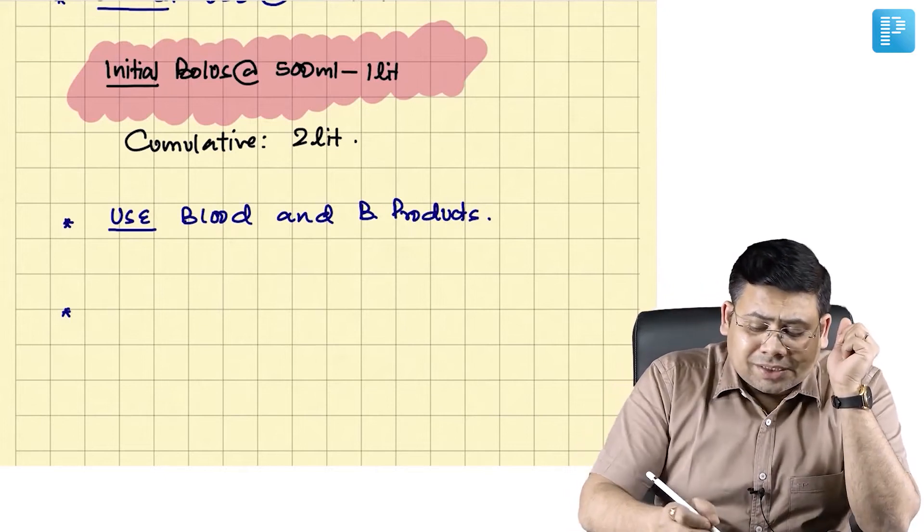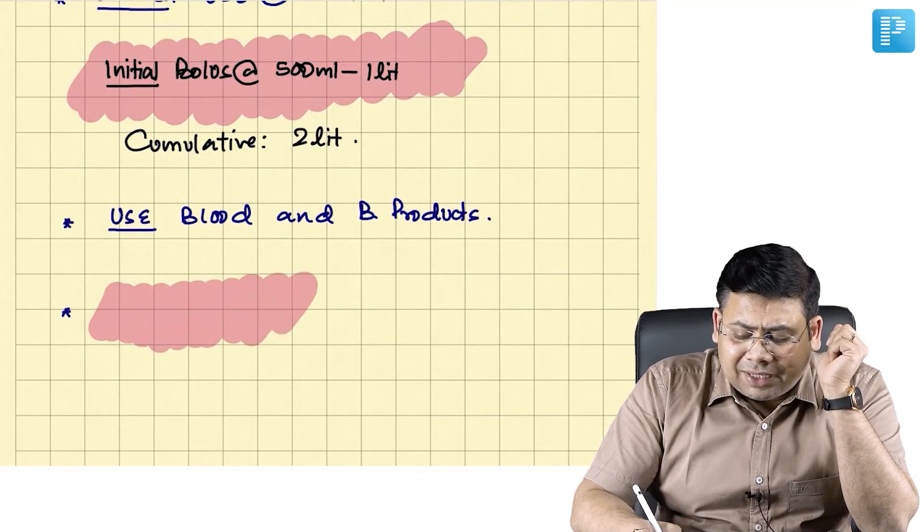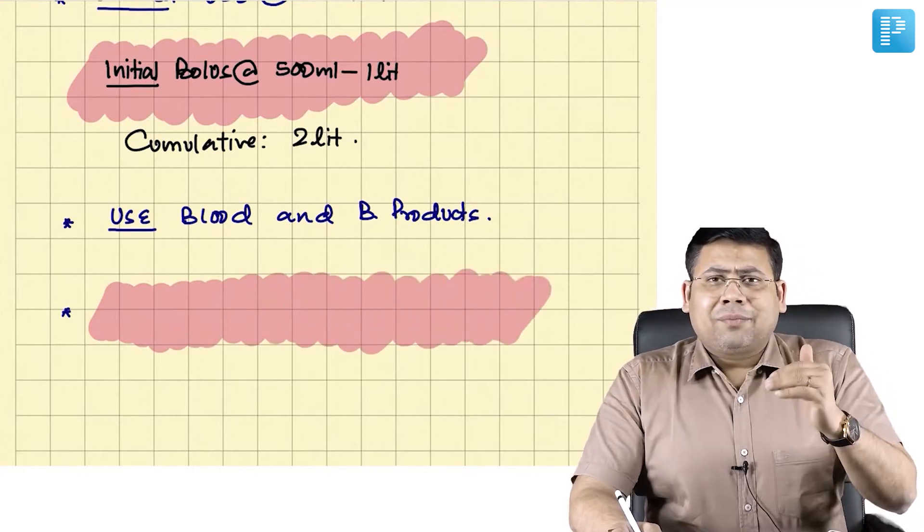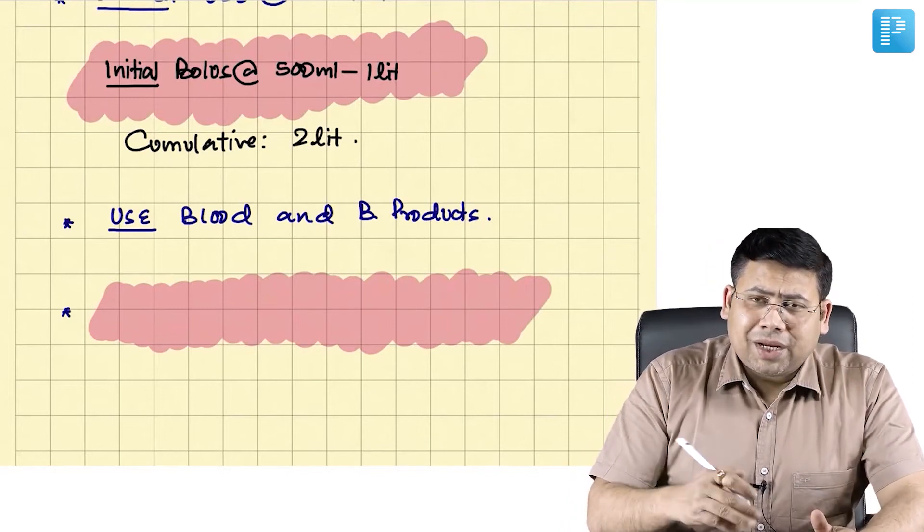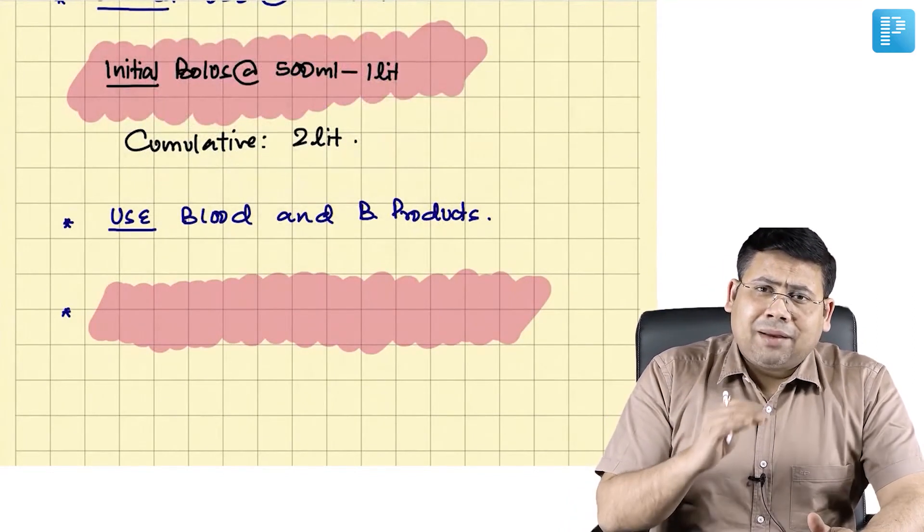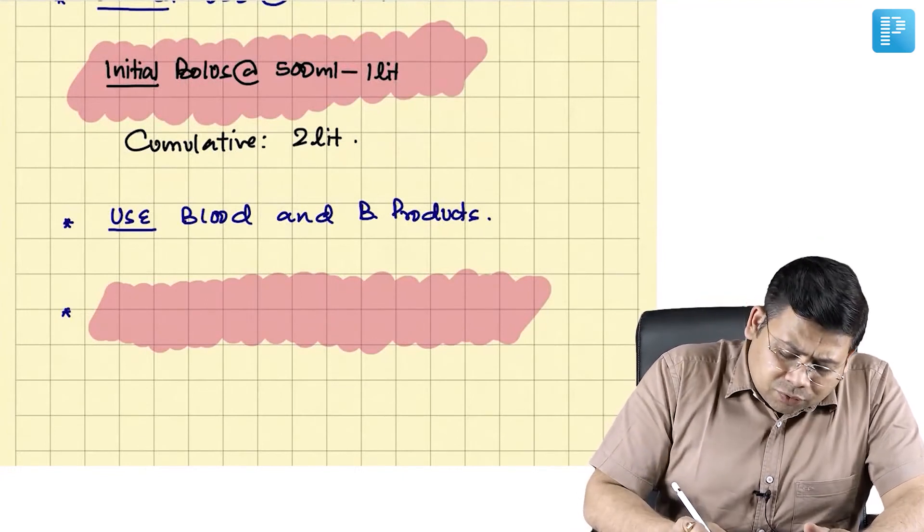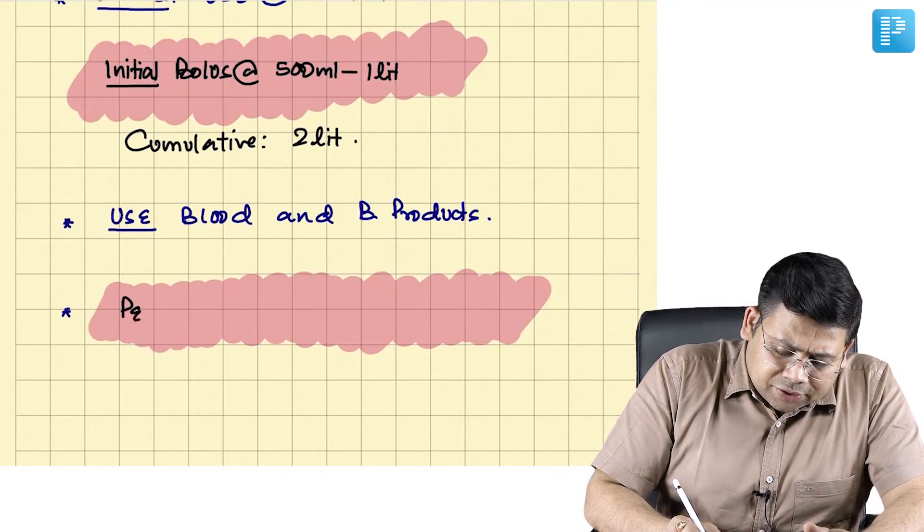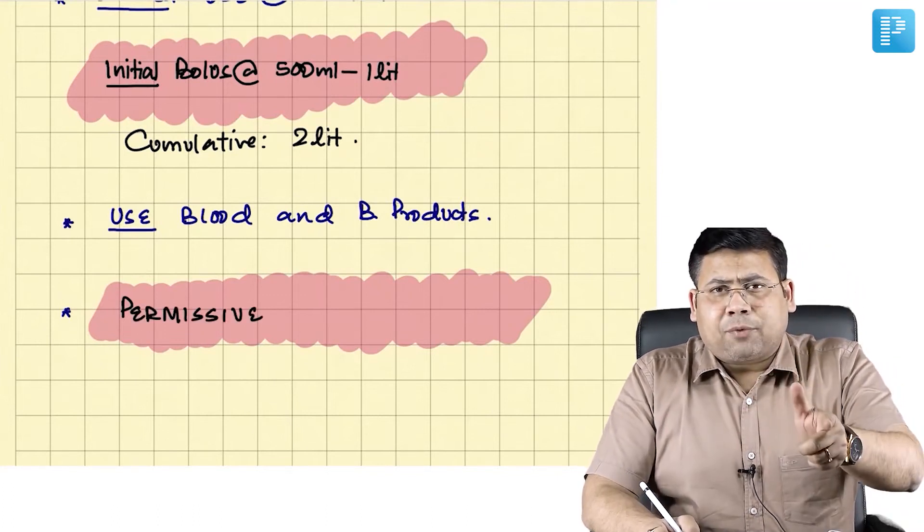So it has been seen that if you allow the blood pressure to fall to a permissible extent, you can further minimize the ongoing blood loss. And hence, don't rush behind blood pressure. Maintain a minimum threshold. That's more than enough. And this is what is known as permissive hypotension.